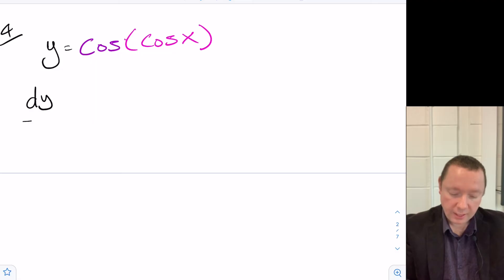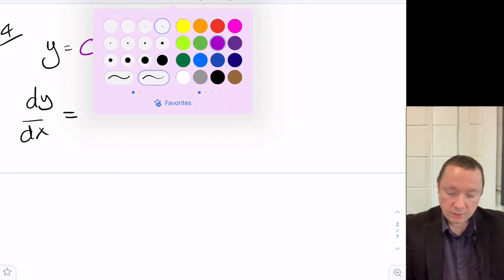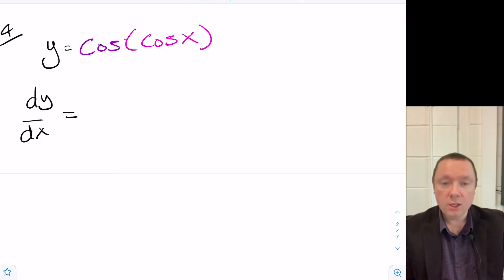So dy/dx is equal to, differentiate my outer function, cos goes to minus sine. Leave the inner function alone. And then I need to times by the differentiated inner function, which was cos x. Cos becomes minus sin x. So that gives me times minus sin x.